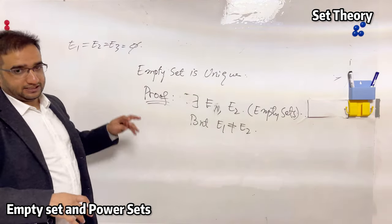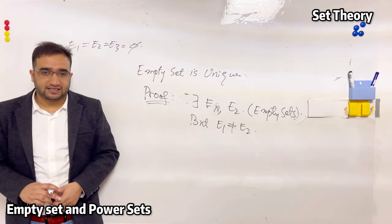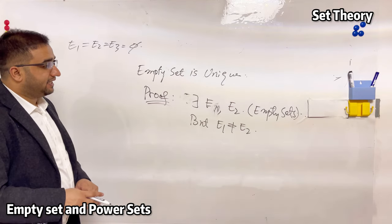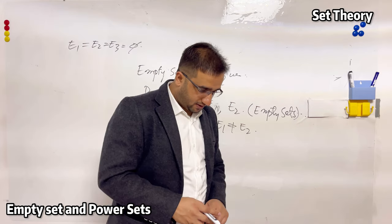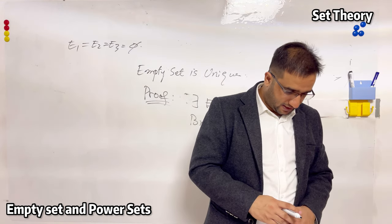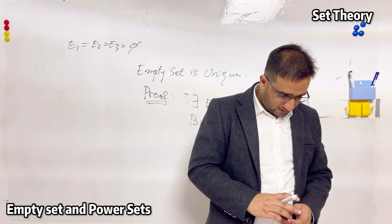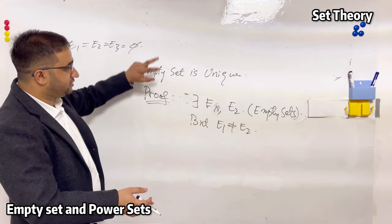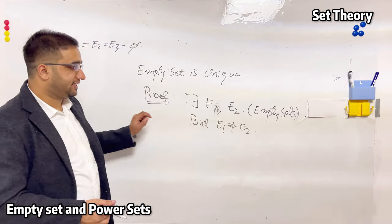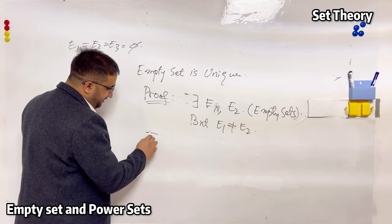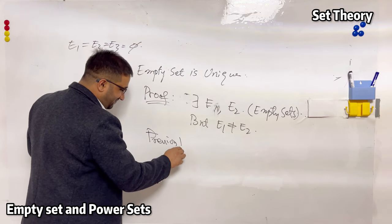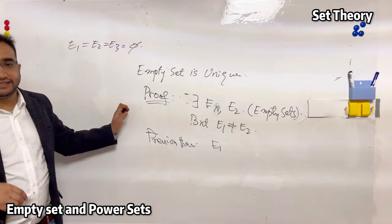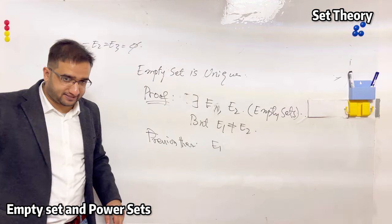The actual claim is that they are always equal — there is only one empty set in the universe with no elements. Now, I already proved the previous theorem, so I will use it again here. From the previous theorem, if a set E is an empty set, then it is a subset of every other set.